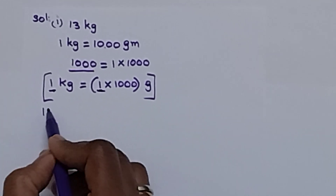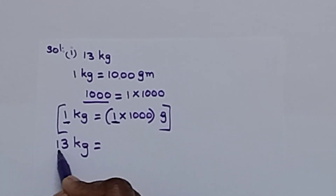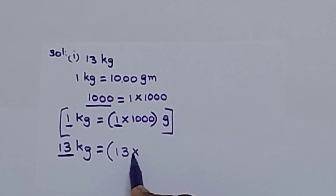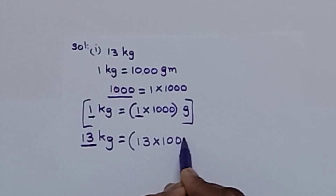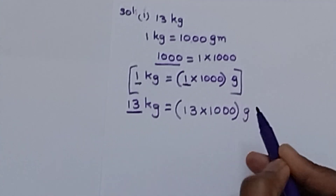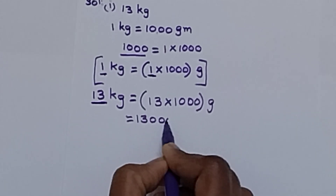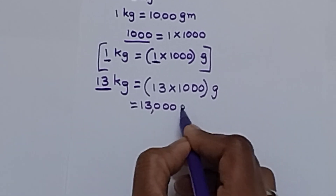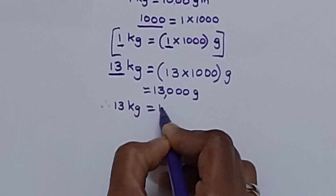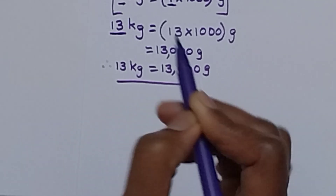Taking 13 kilograms — the number beside kilogram is 13. So I am writing 13 into 1000. 13 into 1000 equals to 13,000 grams. Therefore, 13 kilograms equals to 13,000 grams. This is the solution.